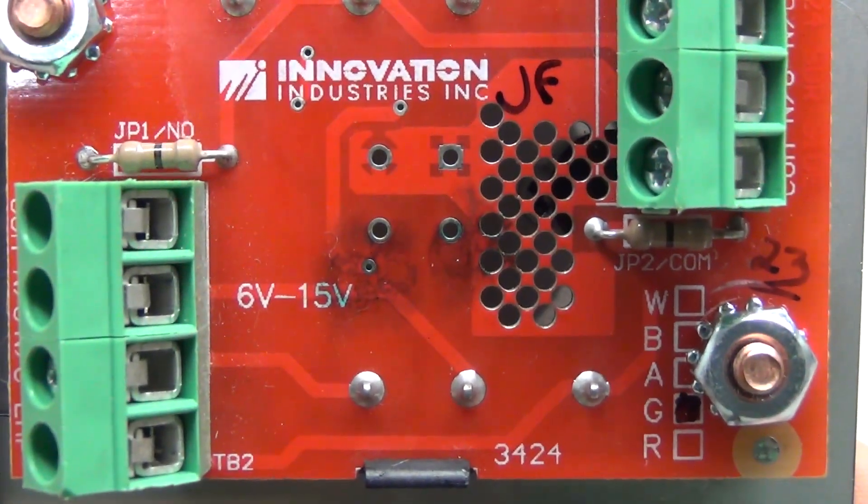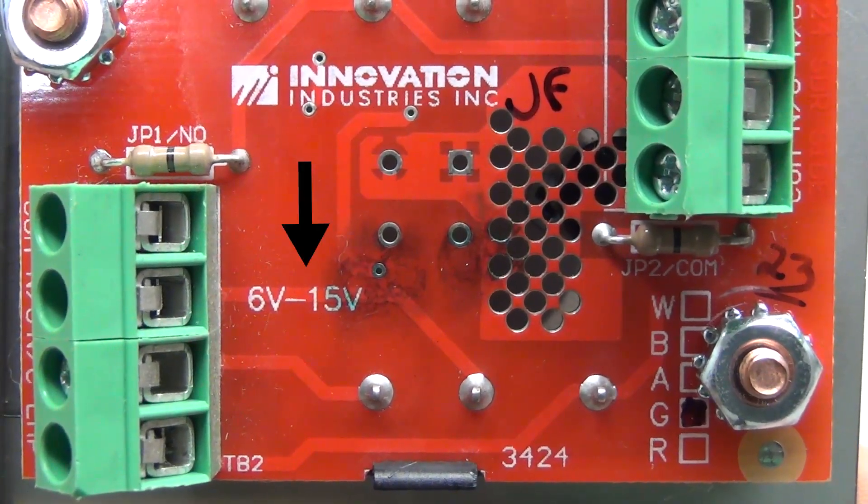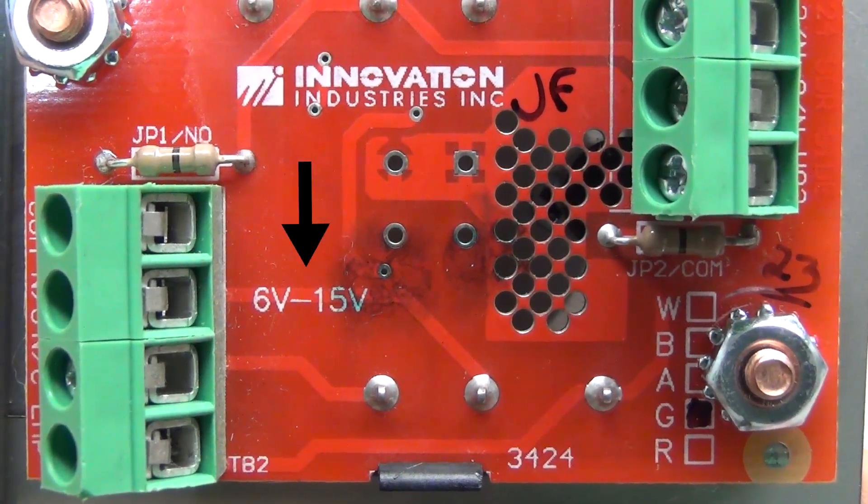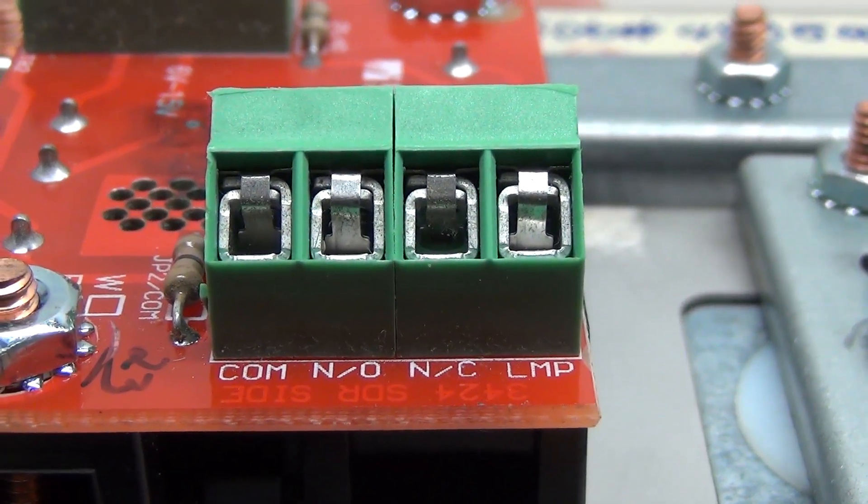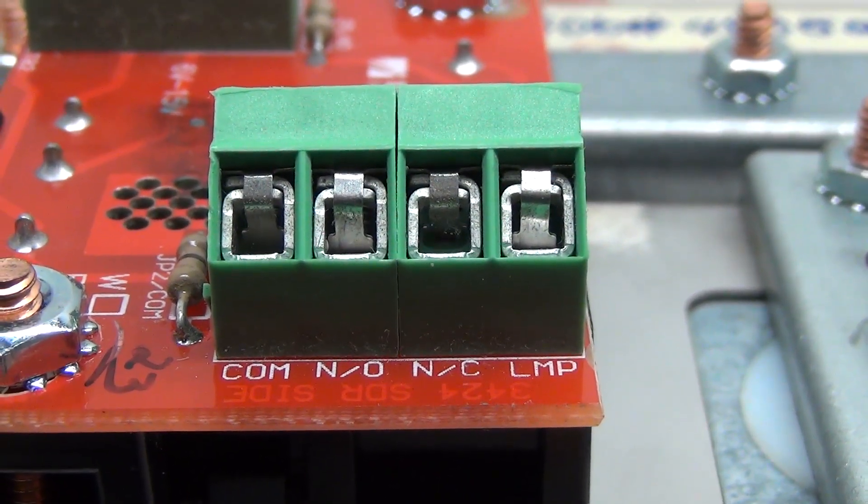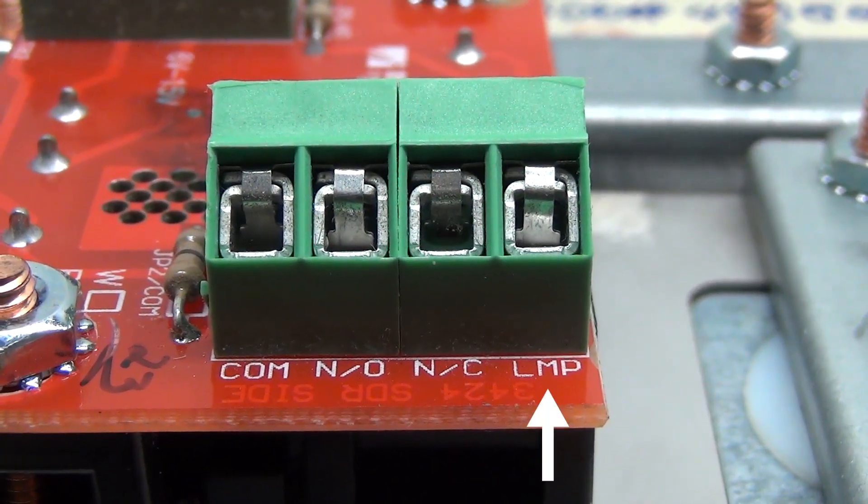Now taking a closer look at the circuit board, you can see the innovation industries logo up there. Here we have the voltage, which this board can run 6 to 15 volts, and the color on the right. Now you'll notice there are four connectors on either side of the board and each one has a common, a normally open, a normally closed, and an LED connection.